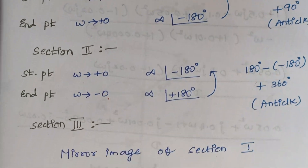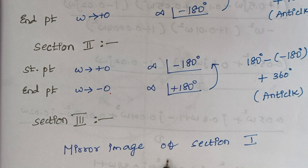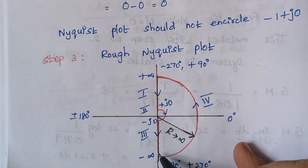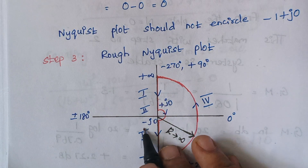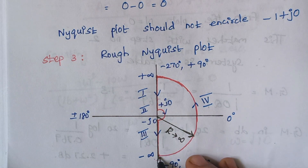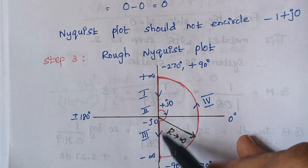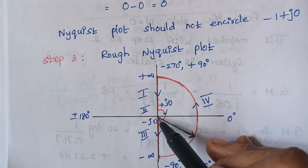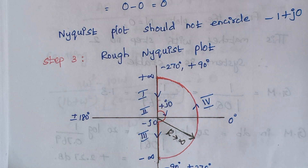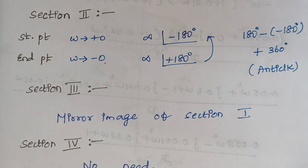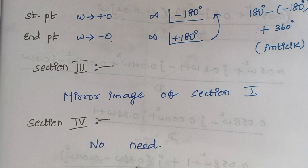Section 3 is simply the mirror image of Section 1, starting at −0 and ending at −∞. Section 4, going from −∞ to +∞, has infinity values at both ends so it does not need separate analysis.